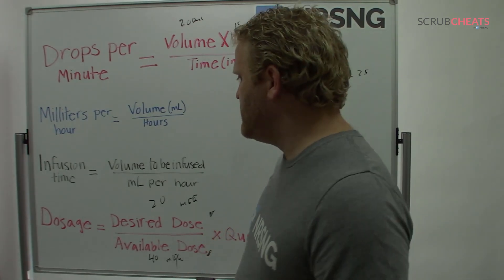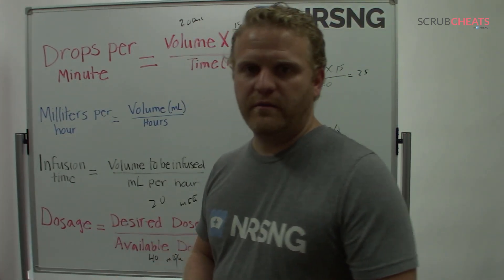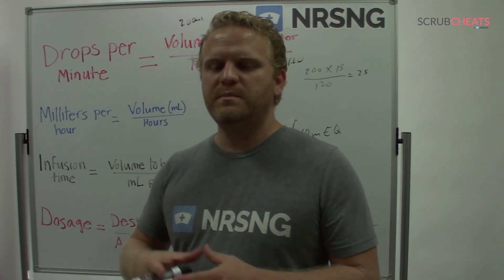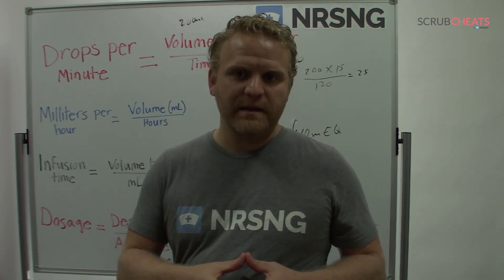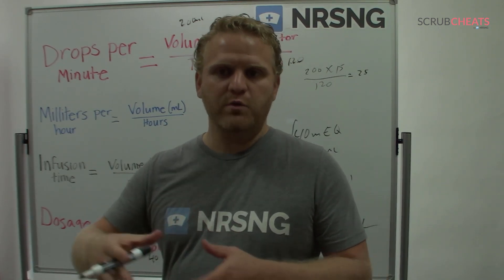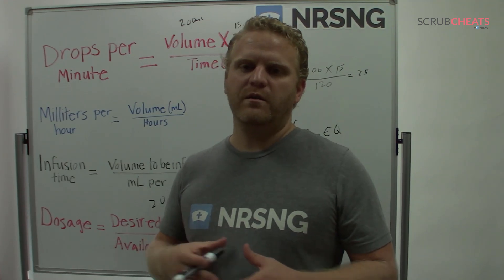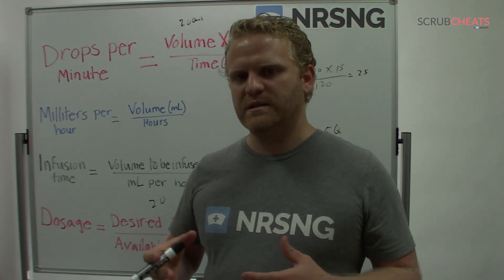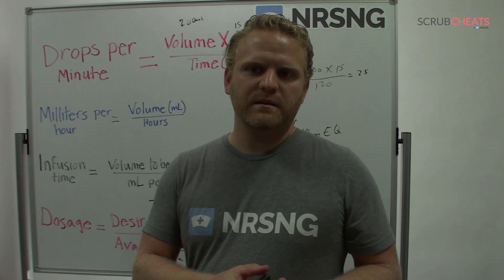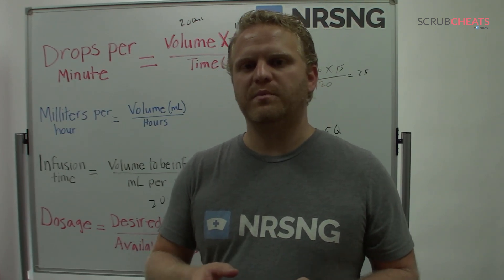For our last example, we'll cover IV pump rate — finding the rate to set a pump. You find the total volume to be infused in a certain time period and divide volume by hours. This may require extra steps to find total volume or dose first. Once you've calculated the volume required, divide it by total time in hours to get milliliters per hour.